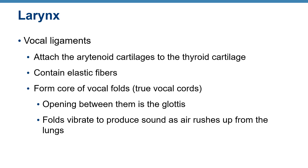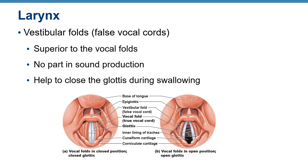Vocal ligaments attach from the arytenoid cartilage to the thyroid cartilage and contain elastic fibers. When air passes between the vocal ligaments, it produces sound. The opening between the vocal ligaments is called the glottis. Looking at the diagram, the glottis is the opening and the true vocal cords are shown in white. Air passing through vibrates the vocal folds to produce sound.